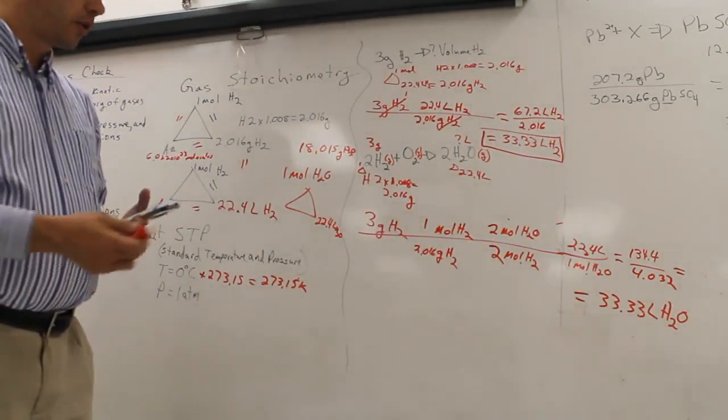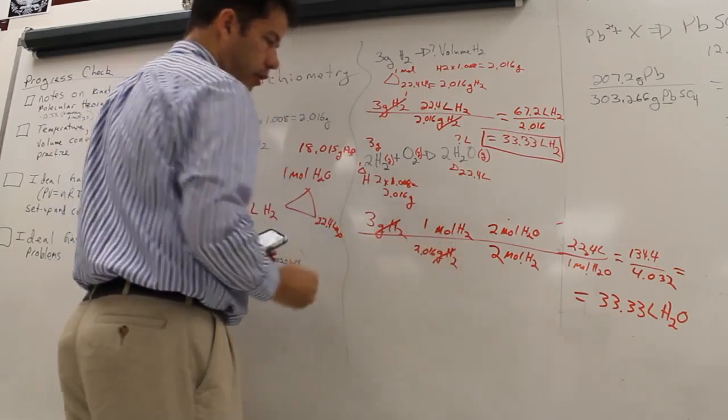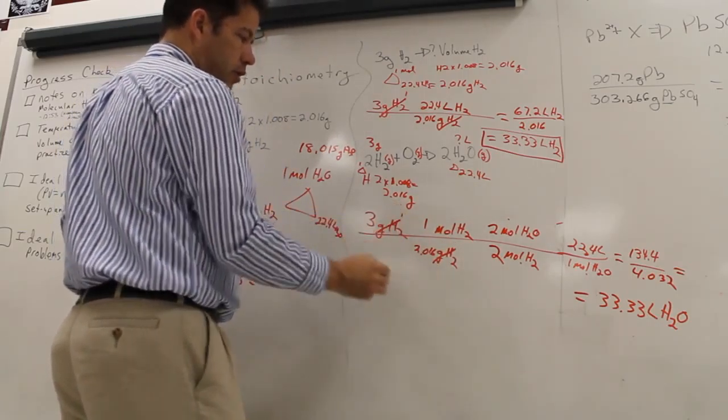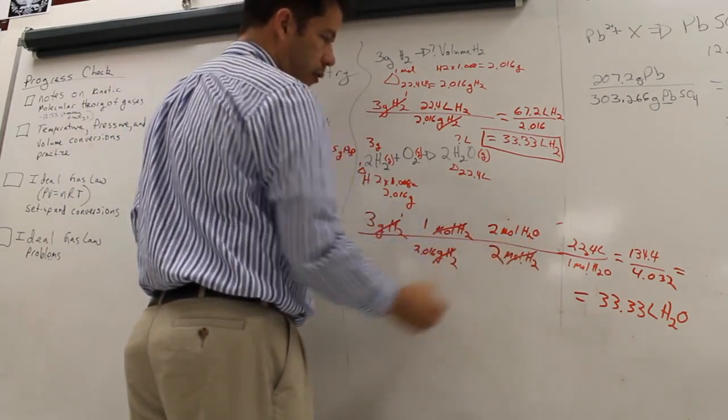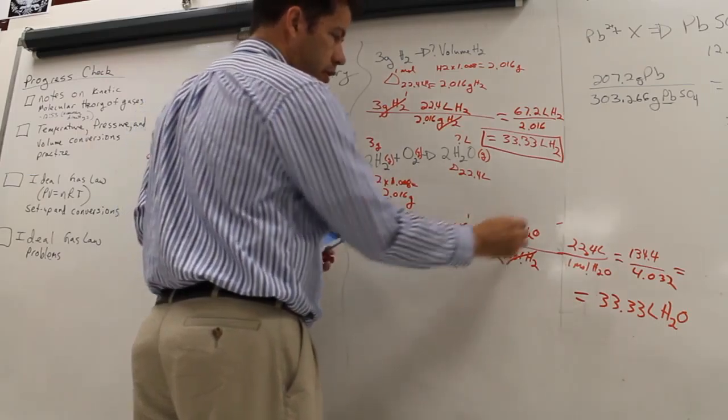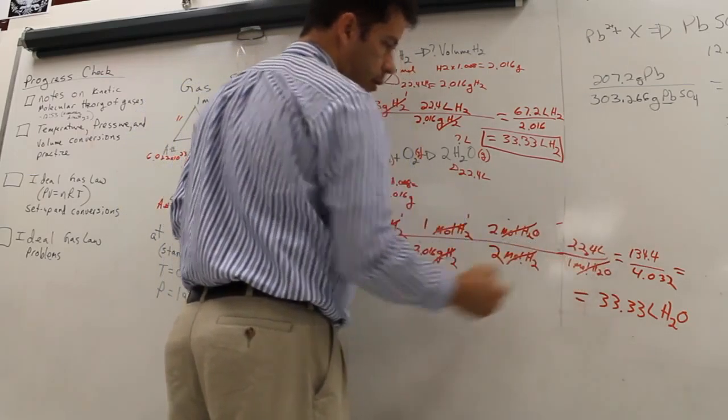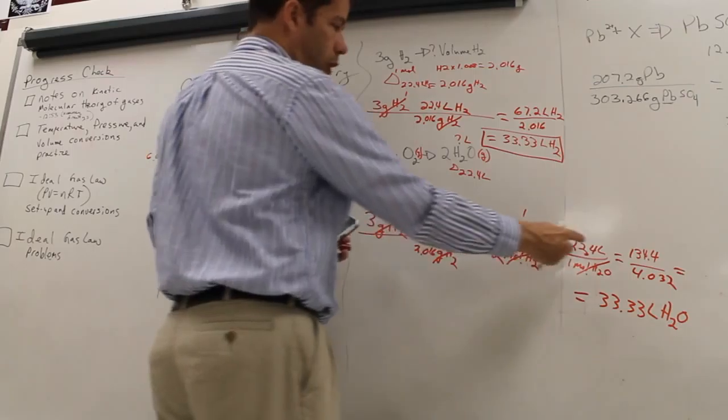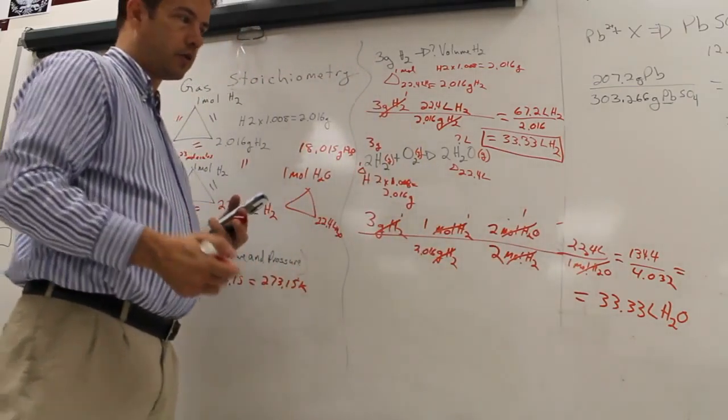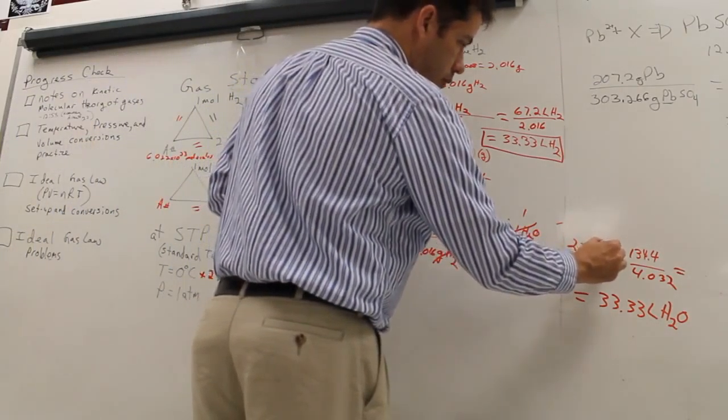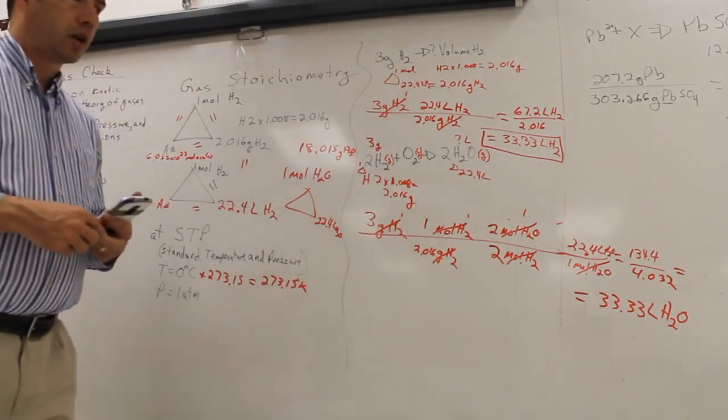How did I know that? Grams of H2 divided by grams of H2 cancel to 1. Moles of H2 divided by moles of H2 cancel to 1. Moles of H2O divided by moles of H2O cancel to 1. And what is left? Liters of H2O. Never labeled that one.